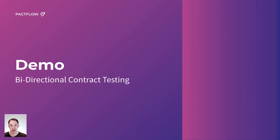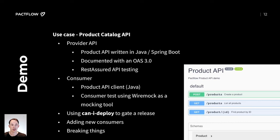Let's get into a demo of this feature in action. Our use case here is a product catalog API, and we're going to test it using an OpenAPI 3 document. Note that the current provider contracts that Pactflow supports is just an OpenAPI spec, and we'll be adding support for different types of contracts over time.